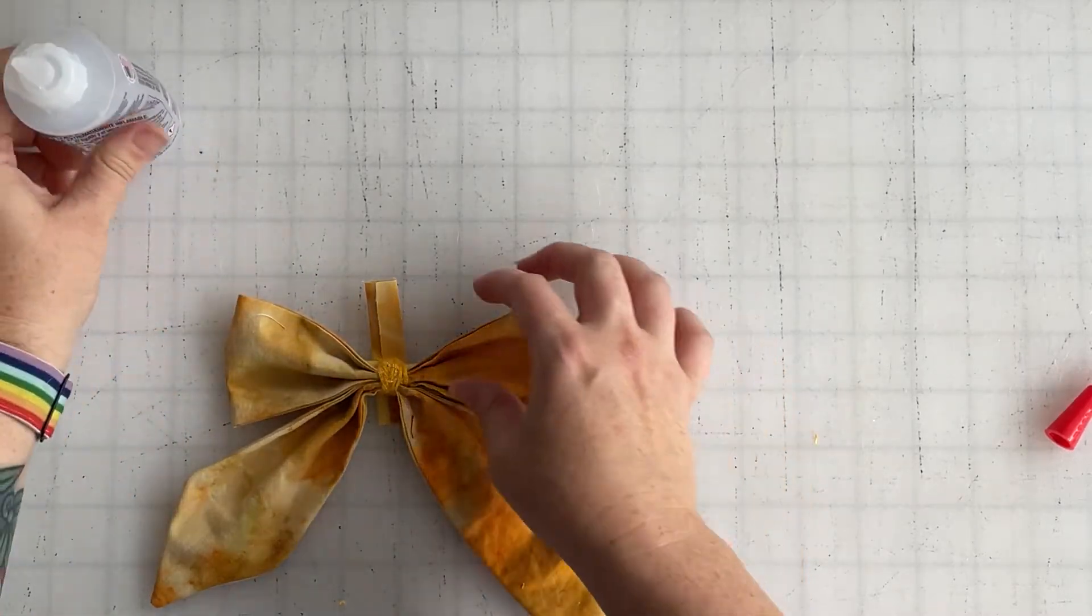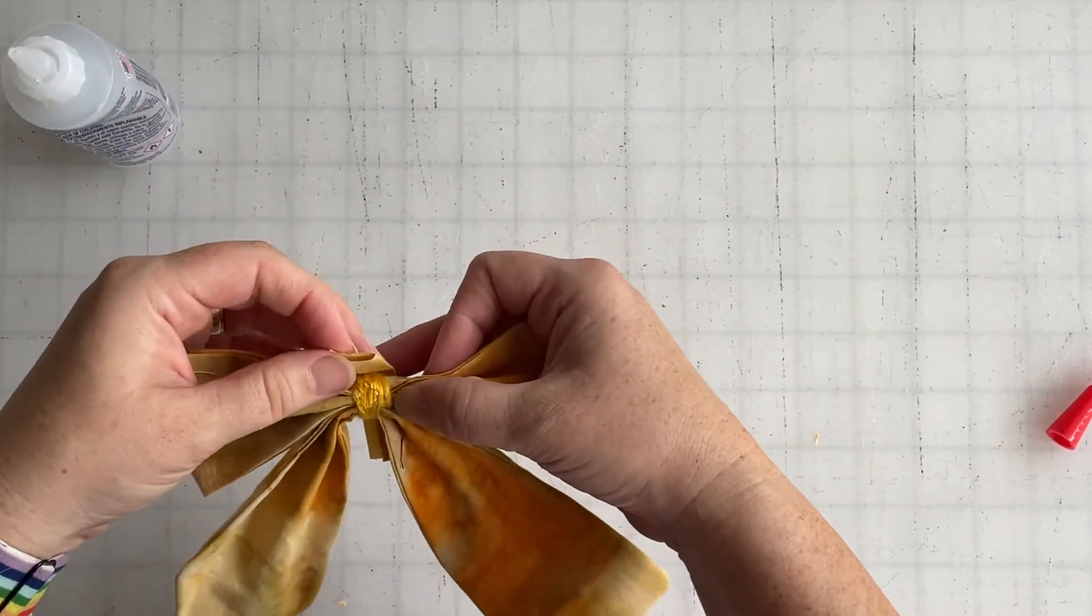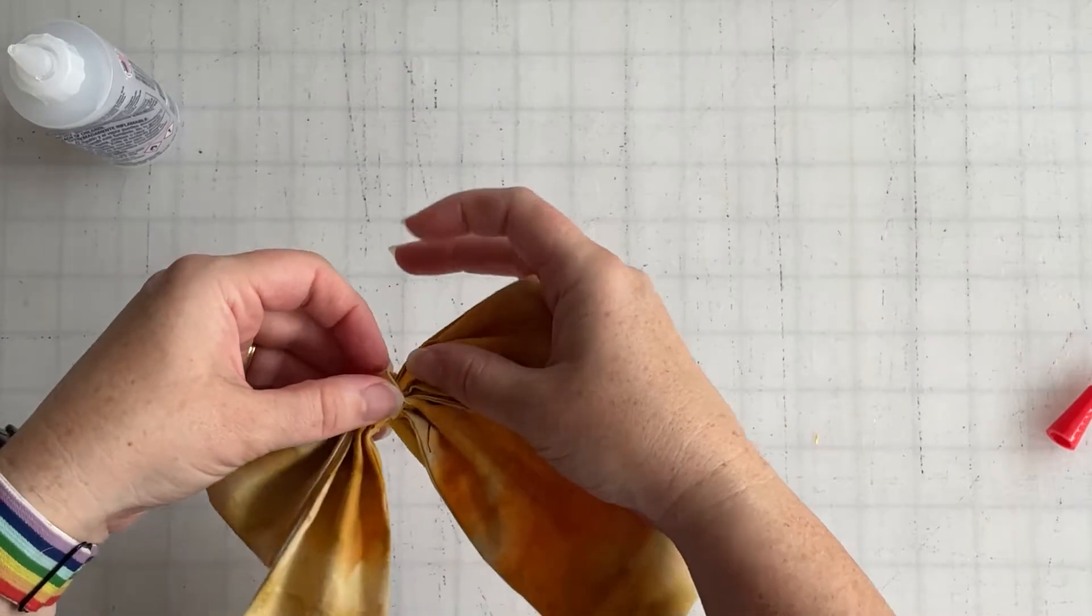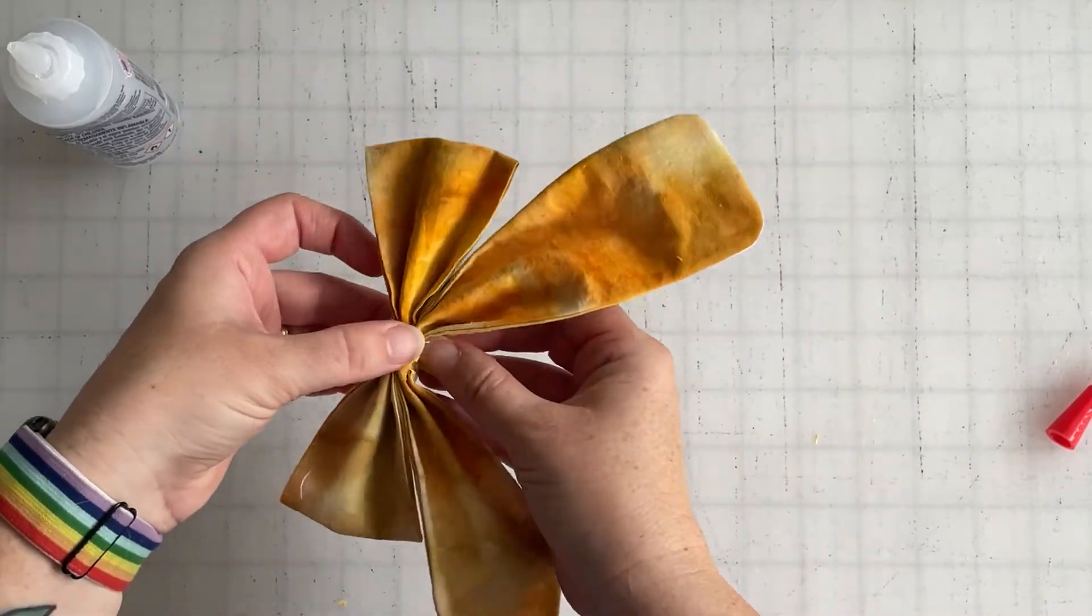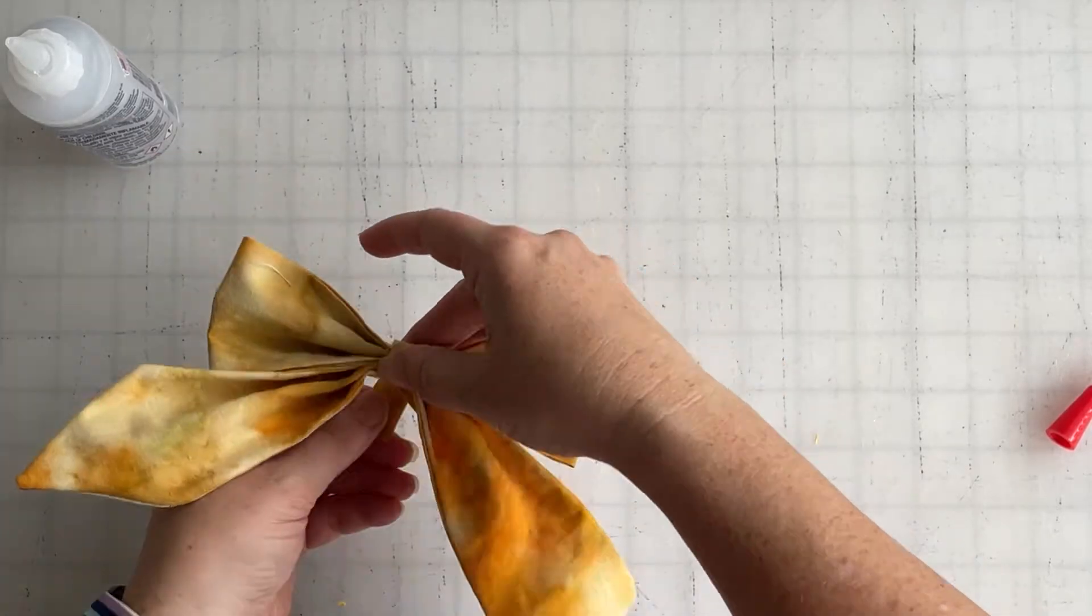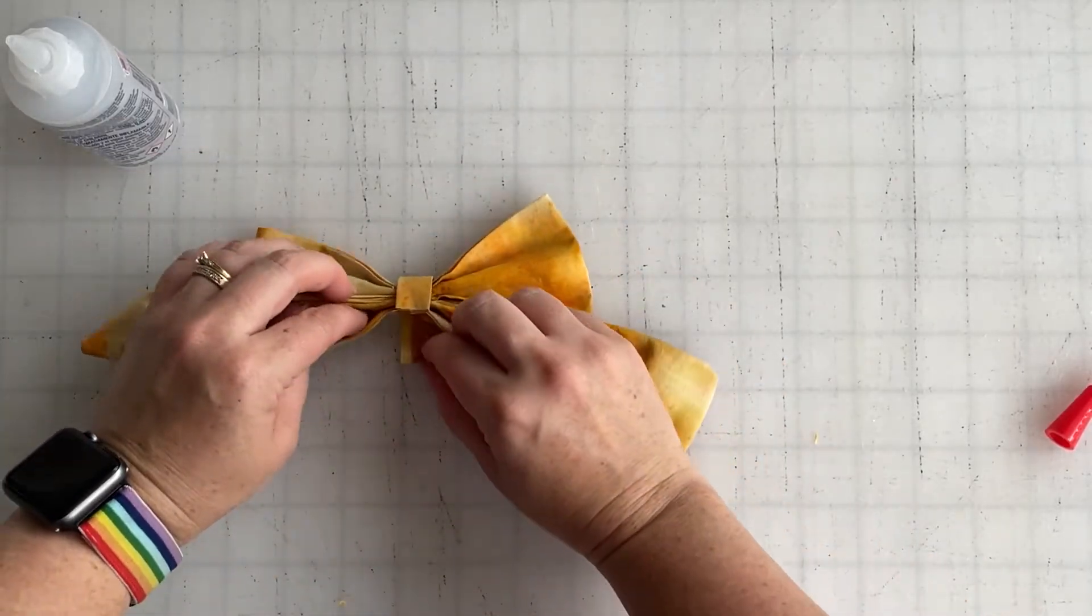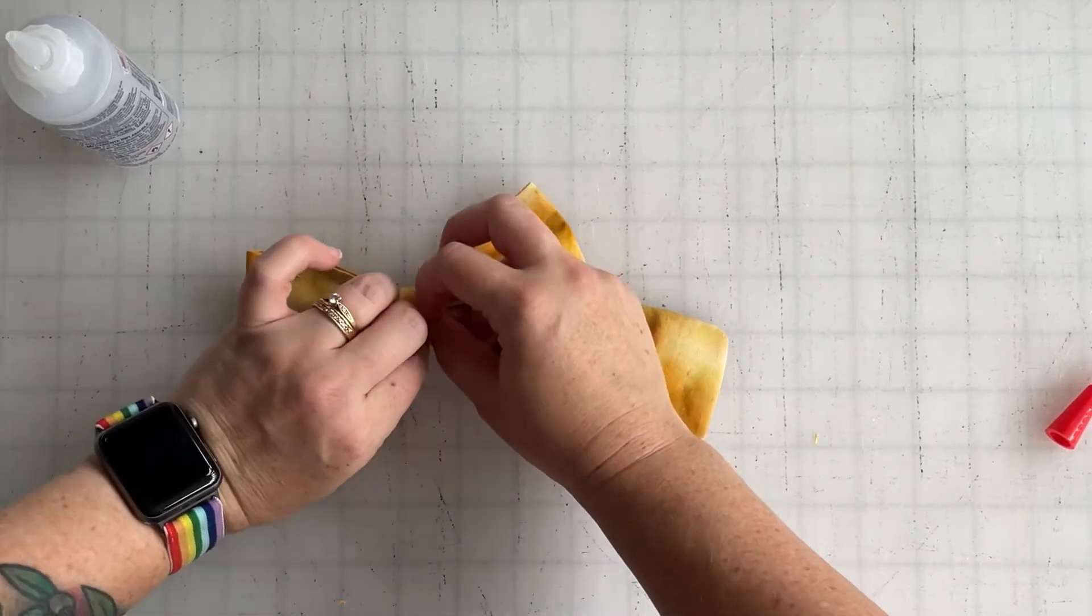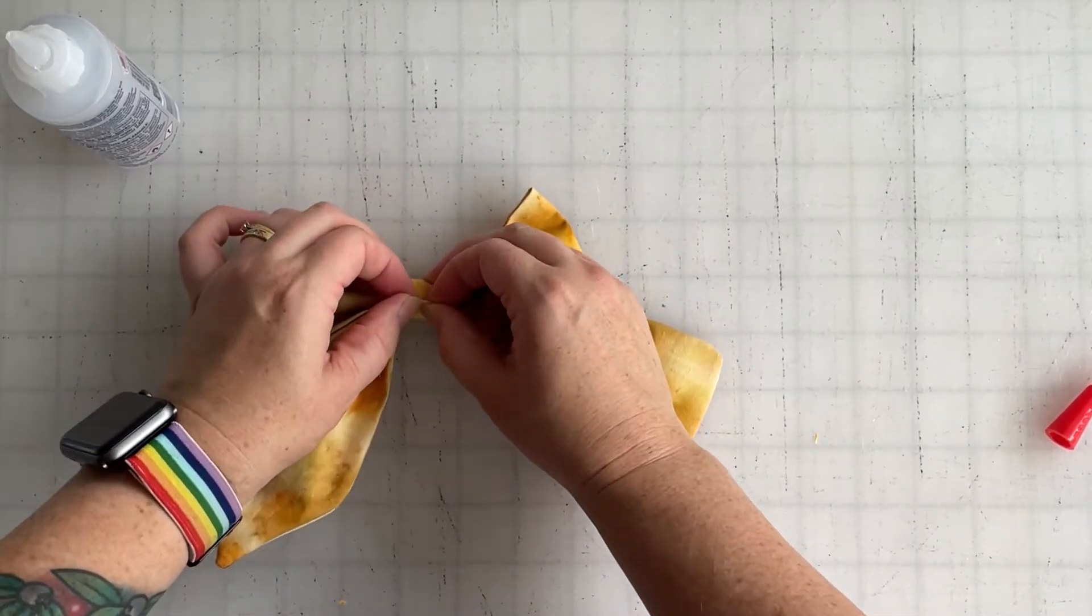I haven't decided how I'm going to attach this to something yet, so I'm just going to finish the bow as is. You just want to wrap it and glue it there, and then you're going to give this end a little tuck so the raw edge gets hidden.